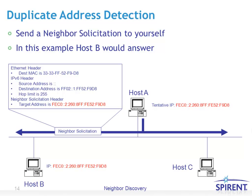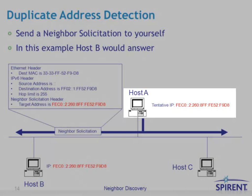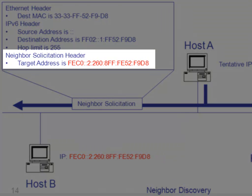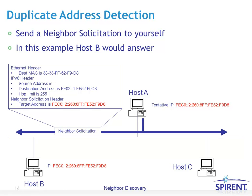Duplicate Address Detection (DAD) is used when a device first boots up and attains its IP information, to determine if the IP address it has configured is already in use by another host. With DAD, you send a multicast Neighbor Solicitation based on your own configured IP address — converting your unicast IP address to the SNM address, mapping that to a multicast MAC, and sending it out to see if anyone else responds. If another host is also listening to that destination multicast MAC and recognizes the target address as its own, it will respond, revealing the address conflict.